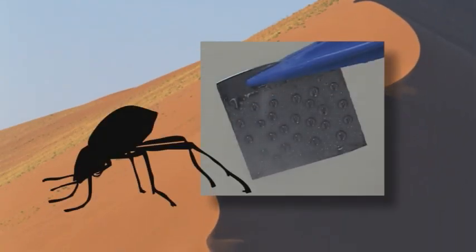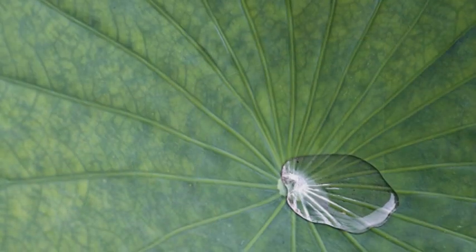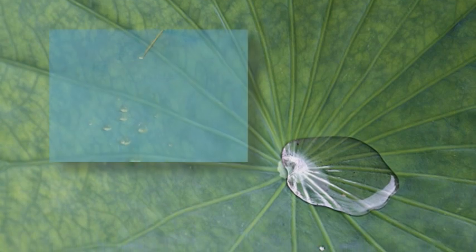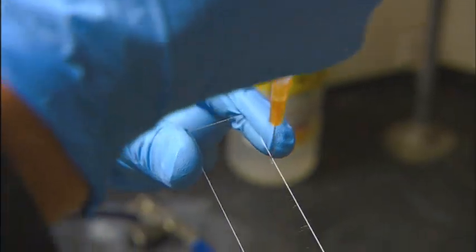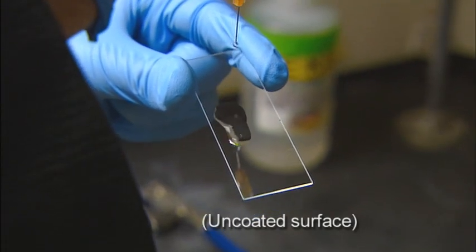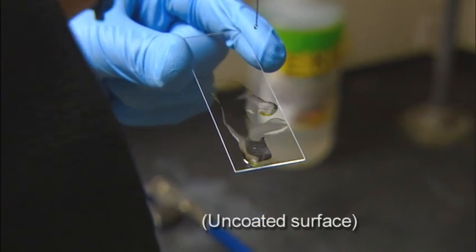A beetle survives in the desert by harvesting water from fog that collects on its back. Lotus leaves stay healthy because of complex cleansing abilities. Scientists at Sandia Labs have studied and built on these amazing examples of how nature solves difficult engineering problems.